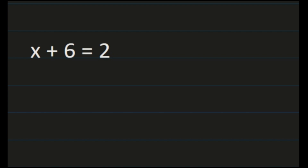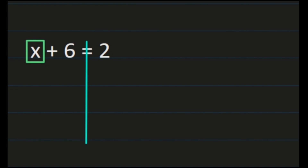For our first example, we have x plus 6 equals 2. We are going to work through these problems isolating our variable and using our inverse operation. Put a box around the variable x so you can see what you're isolating. This line separating the left-hand side and the right-hand side can be very helpful. So x plus 6 — we use the inverse operation, which is to subtract 6 from both sides.